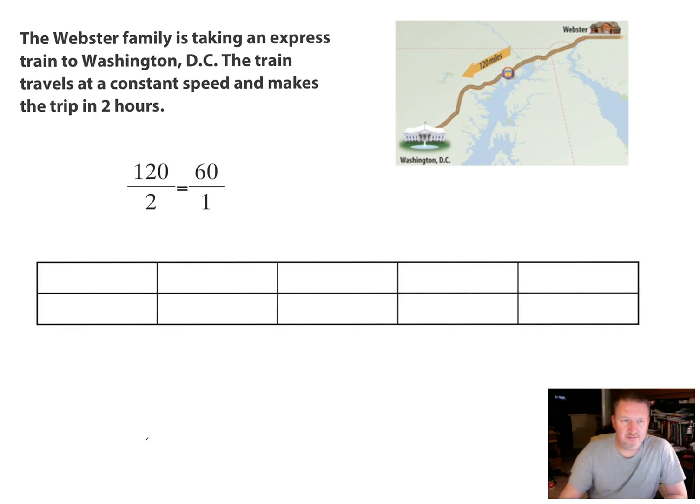All right. So now that we have our unit rate, we can go ahead and fill out a table. So I'm going to say, I'm going to make this my distance. And I'm going to make this my time. Okay. So 60 miles in one hour. So in order, and what I'm doing is I'm coming up with equivalent ratios. So I'm going to multiply. And I'm always going to come back to this one to come up with my equivalent ratio.